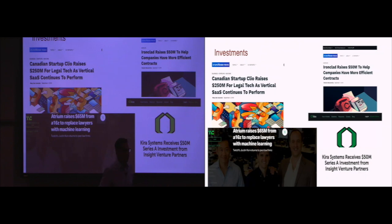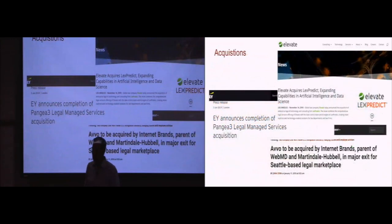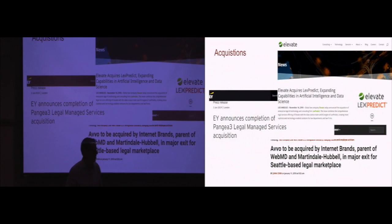Legal tech had traditionally been somewhat of a fringe category from a venture capitalist perspective. But now we've seen more marquee VC funds invest in legal tech, invest significant amounts. Clio just raised $250 million. Atrium, $65 million from Andreessen Horowitz. Ironclad, Kira, and so on. We've also seen an increase in acquisitions. Ernst & Young recently bought a very well-known legal tech company from Thomson Reuters, Pantyreo 3. AVO was acquired by Internet Brands. Elevate acquired LexPredict.